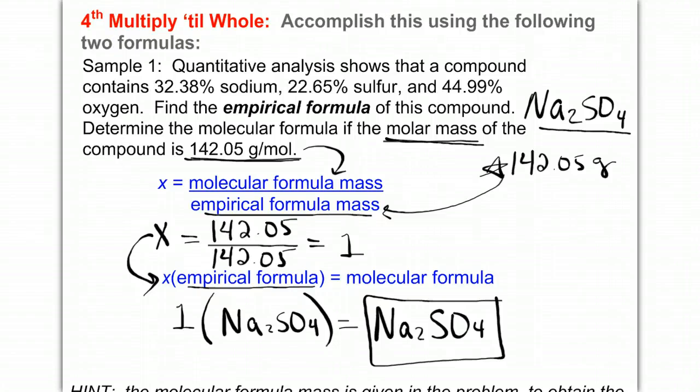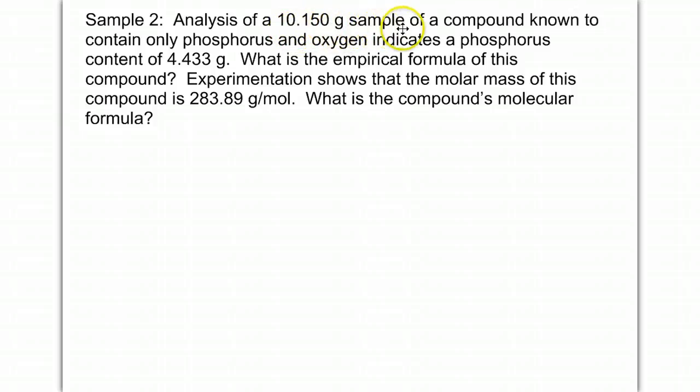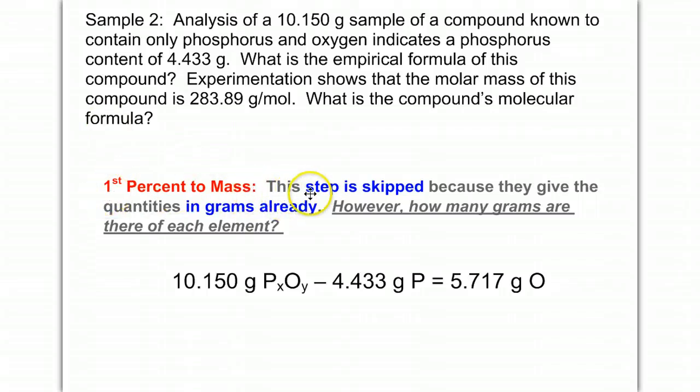One more example, example two. Analysis of a 10.150 gram sample of a compound known to contain only phosphorus and oxygen indicates a phosphorus content of 4.433 grams. What is the empirical formula of the compound? And if experimentation shows that the molar mass is 283.89 grams, what is the compound's molecular formula? The first step, percent to mass, is skipped because they give the quantities in grams already. However, we need to determine how many grams there are of each element.